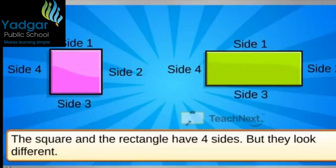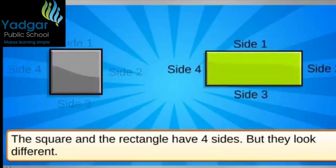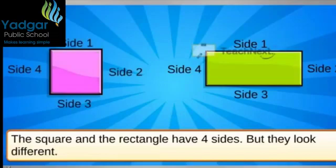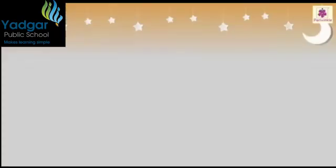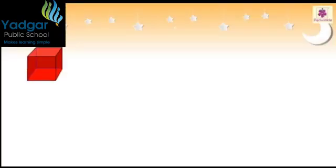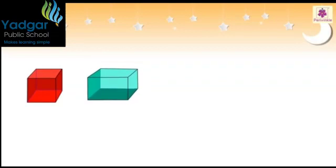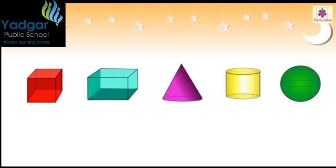All the sides of the square are the same, but the sides of a rectangle are not. In a rectangle, only opposite sides are equal. Let us explore solid figures.